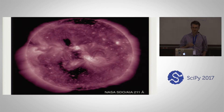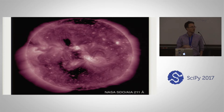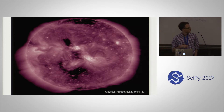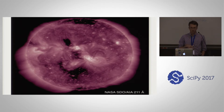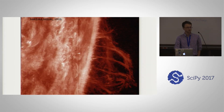I'm in solar physics and we are fortunate to have a lot of really great high resolution data - high spatial resolution, temporal resolution, and spectral resolution. This is an image from the Atmospheric Imaging Assembly on the Solar Dynamics Observatory in the 211 Angstrom band, a narrow band imager that just sits and stares at the Sun. You have a full disk view all day, every day, and the data is completely open.